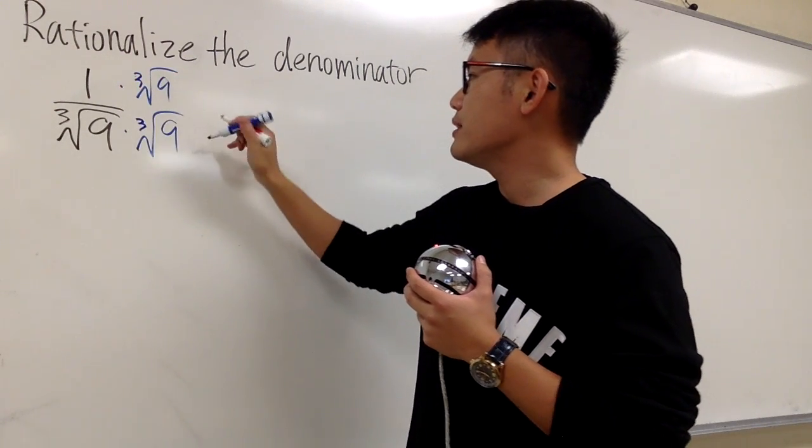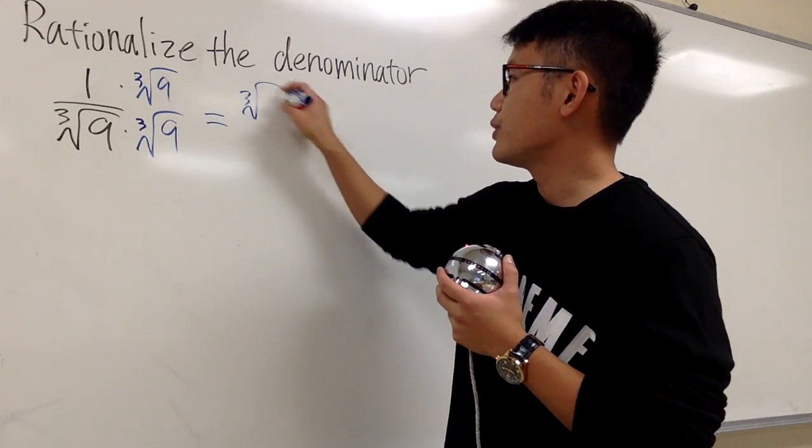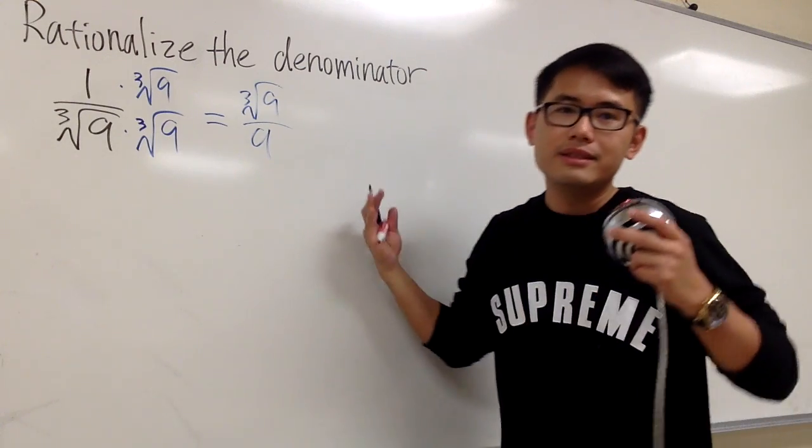And then you just say, this is so easy because on the top you get 1 times this, which is the cube root of 9 over this times 9 is 9. And you think, ah, this is it, that's so easy.